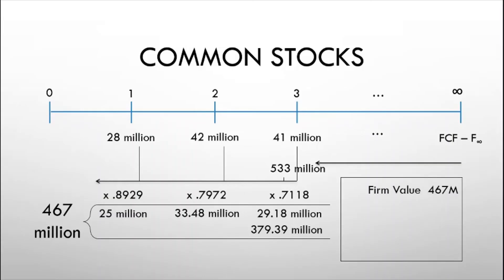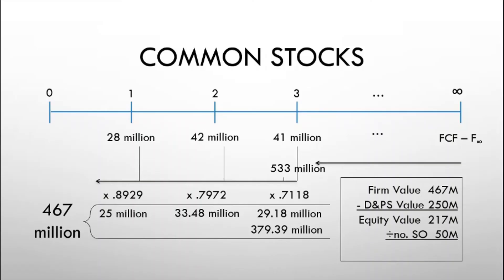Once we have the firm value of 467 million pesos, we deduct the portion financed by debt and preferred shares — a total of 250 million — leaving an equity value of 217 million pesos. Divided by 50 million shares outstanding, the estimated stock value is 4.34 pesos per share. That's how you calculate the stock value using the corporate valuation model in a non-constant growth scenario.